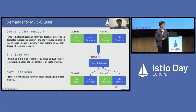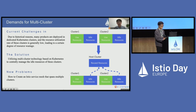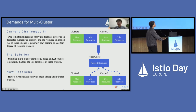Due to historic reasons, many of our products are deployed in dedicated Kubernetes clusters. The resource utilization is generally low, leading to a certain degree of resource wastage. We have adopted multi-cluster technology based on Kubernetes to centrally manage the idle resources of these clusters, which has improved overall resource utilization. However, it has also brought a new challenge: how to use service mesh to span multiple clusters.